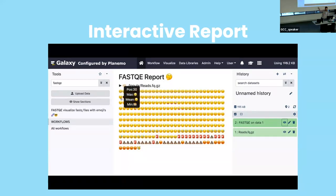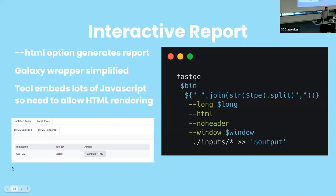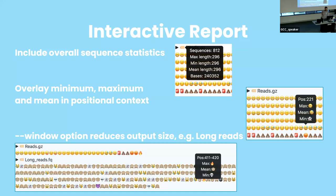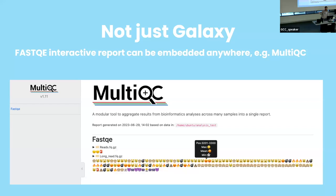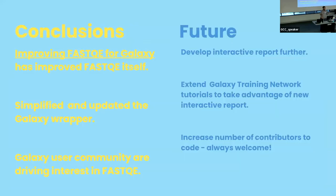You can go through and see at the end the quality gets better — those emojis — and you get some sequencing information in the new version as well. It makes the wrapper simpler. You have to enable HTML because there's a lot of JavaScript going on, but the code is a lot cleaner. You've got tooltips, and the window option now makes it work with long reads. We can summarize and really collapse long reads, and compare short and long, which might be good from an educational point of view. Now that there's an HTML report, it's not just Galaxy — look out for MultiQC in the future where FastQE is going to be in there as well. My summary: improving FastQE for Galaxy has actually just made it better, simplified development, and now it will be easier to add new features.